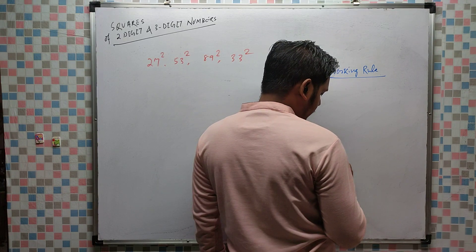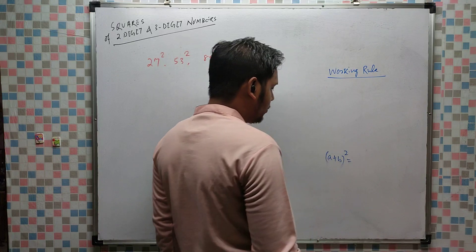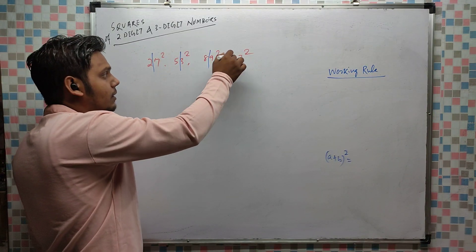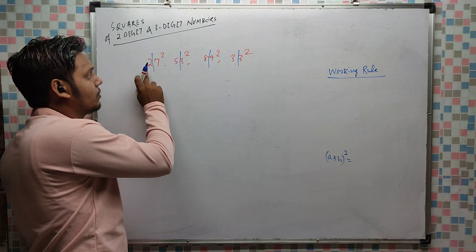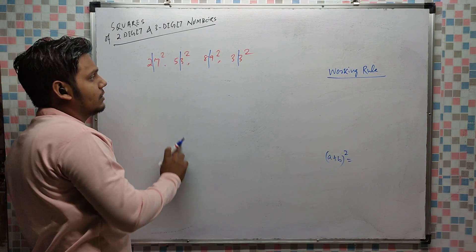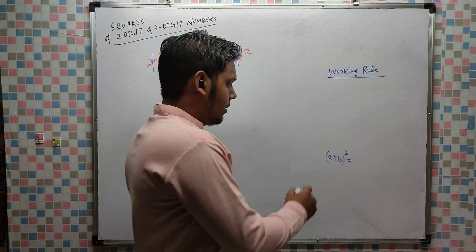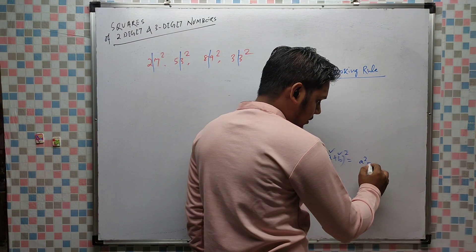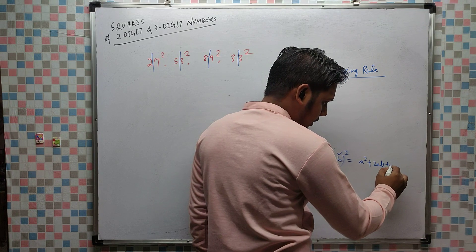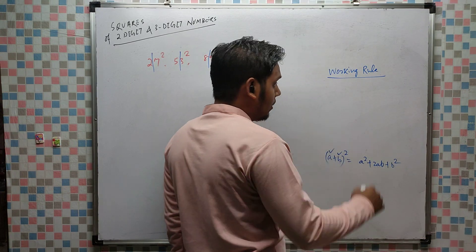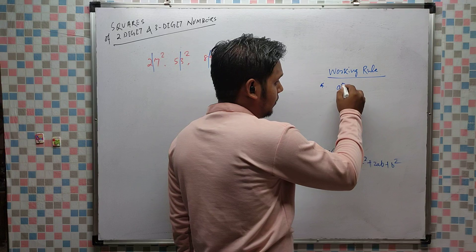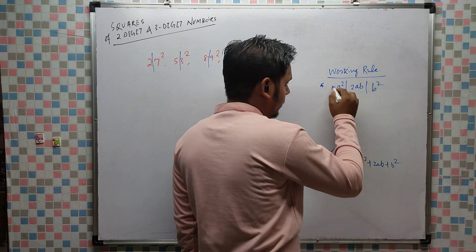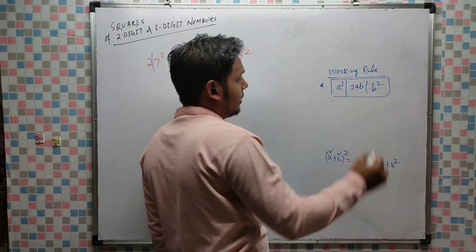We use (a + b)² and split each number into two parts. Since it is a 2-digit number, one digit is a and the other is b. Then: a² + 2ab + b². You have to balance these three terms — a², 2ab, and b² — and you will get the answer.